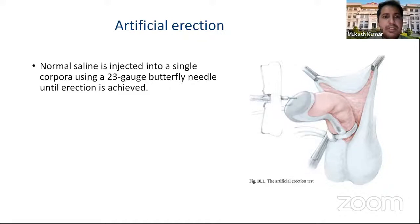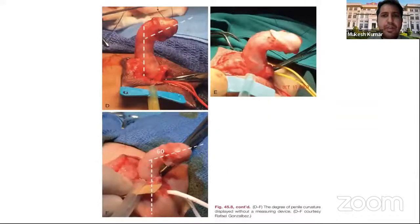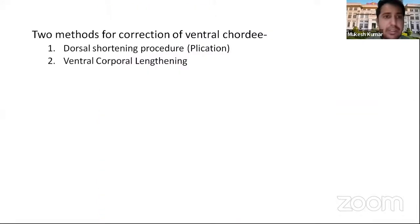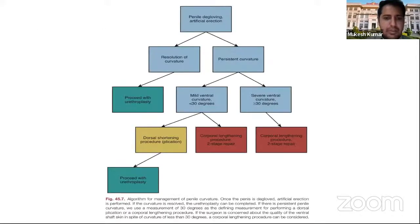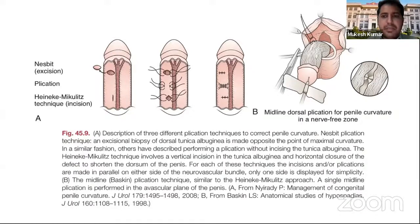In the artificial erection test, normal saline is injected into a single corpus using a 23-gauge butterfly needle until erection is achieved, after applying a ring at the base of the penis. Curvature is measured using a goniometer or by capturing a photograph on a mobile or iPad. If curvature persists, two methods are available: dorsal shortening procedures for curvature less than 30 degrees, and ventral corporeal lengthening for curvature more than 30 degrees. Three methods of plication include Nesbit-axis plication, only plication, and Baskin midline dorsal plication.